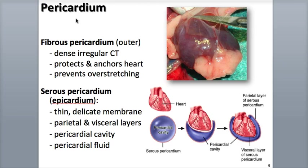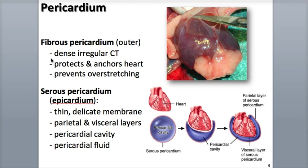Surrounding and protecting the heart is a membrane called the pericardium. It maintains the position of the heart in the mediastinum, but gives the heart enough room for its contraction and movement. There are two main components of the pericardium: the superficial fibrous pericardium and the deeper serous pericardium. The fibrous pericardium is a strong, bag-like outer layer made of dense irregular connective tissue that is attached to the diaphragm. Because it is so tough and inelastic, it functions in physical protection of the heart, maintains the heart's position in the mediastinum, and keeps the heart from overstretching.